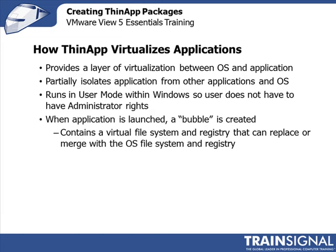Within this bubble, there is a virtual file system and a virtual registry that the application uses to run. The folders, files, and registry keys that exist within this bubble can replace or merge with the OS's file system and registry. We have the ability to determine which ones will replace and which ones will merge. Generally speaking, if it's defined within the virtual file system or virtual registry within the bubble, it's going to mask whatever may exist on the operating system.